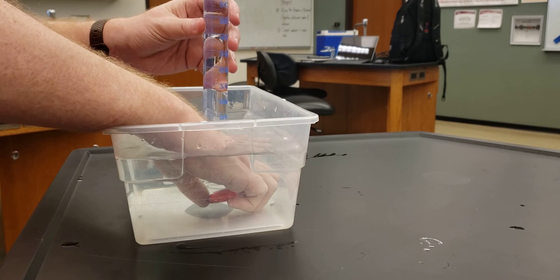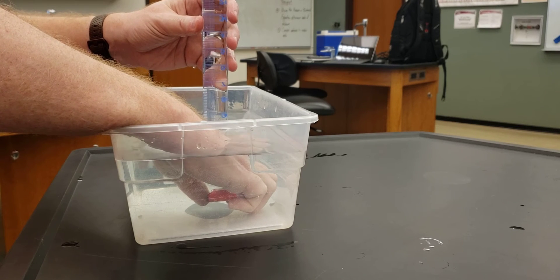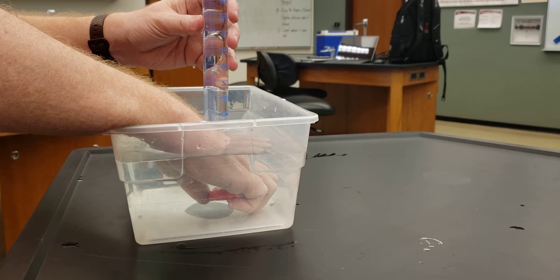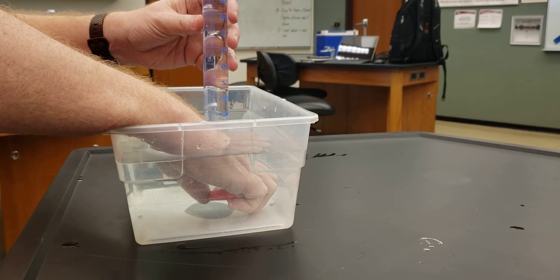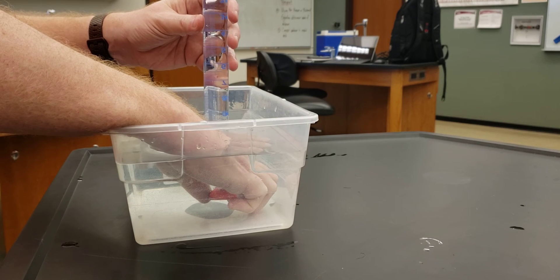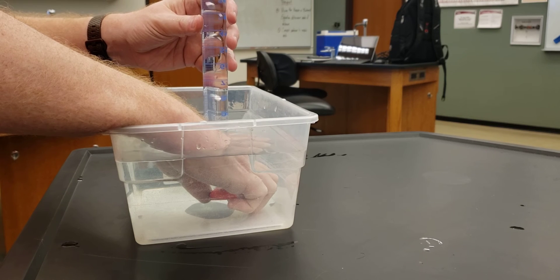Then we put our lighter underneath, depress the release valve, and let the bubbles collect inside the graduated cylinder. That allows us to know how much volume of gas we've collected.